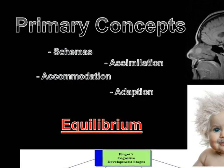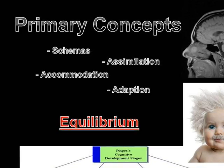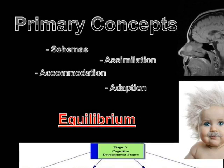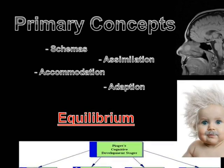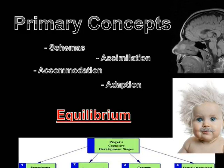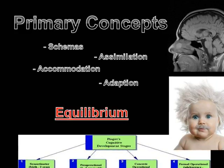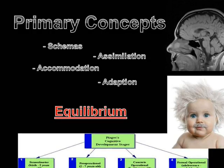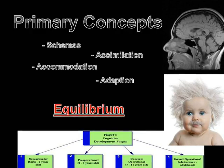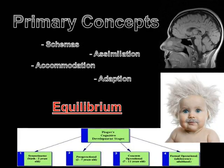Piaget developed stages based on schemas, which are cognitive tools, structures or patterns of physical or mental actions. Once a child acquires a schema, they can adapt that schema to suit their needs. This is how Piaget described learning. There are two ways to adapt schemas: assimilation and accommodation. Assimilation involves the introduction and interpretation of new events or objects into old schemas, whereas accommodation is changing part of the old schema to adapt to a new event, object, or environment.